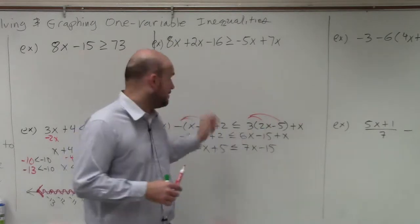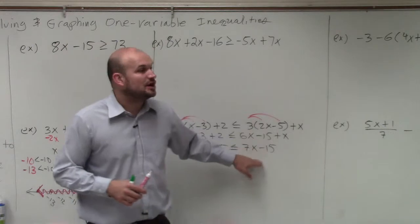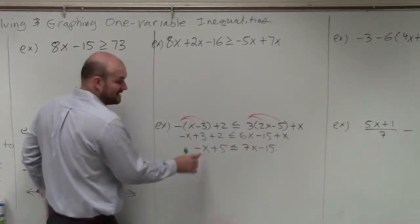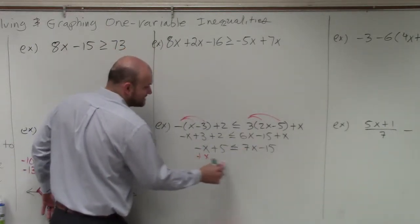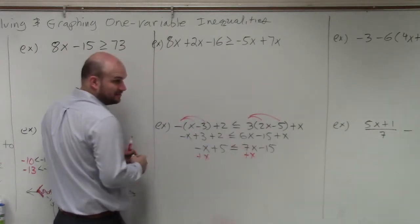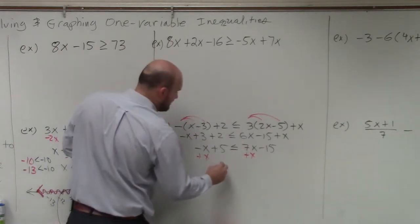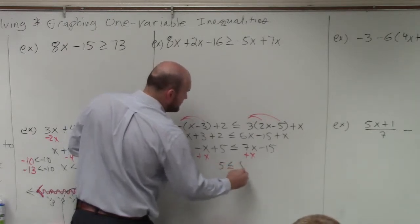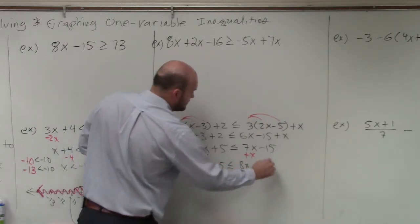I want to get rid of my variable on the left side and solve for the variable on the right side, because this is negative. So if I add x on both sides, then I'll have a positive variable. Does that make sense? So I have 5 is less than or equal to 8x minus 15.